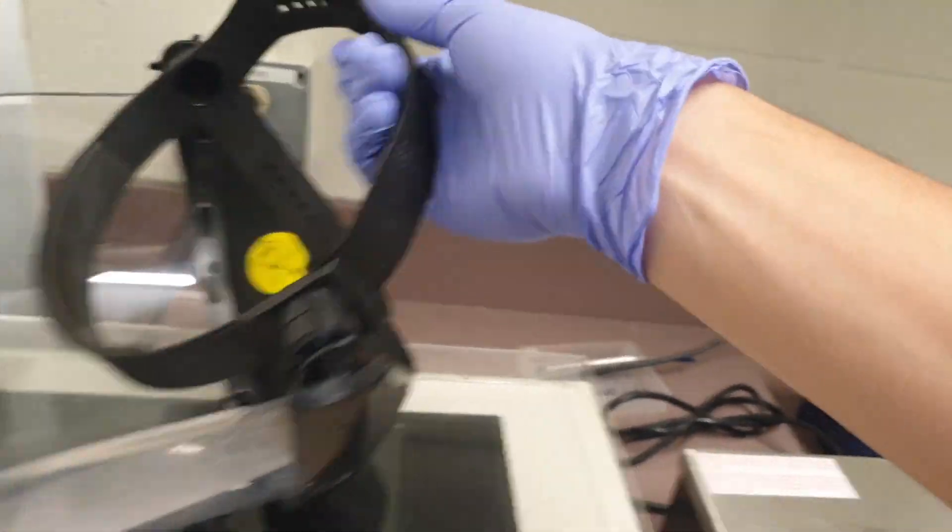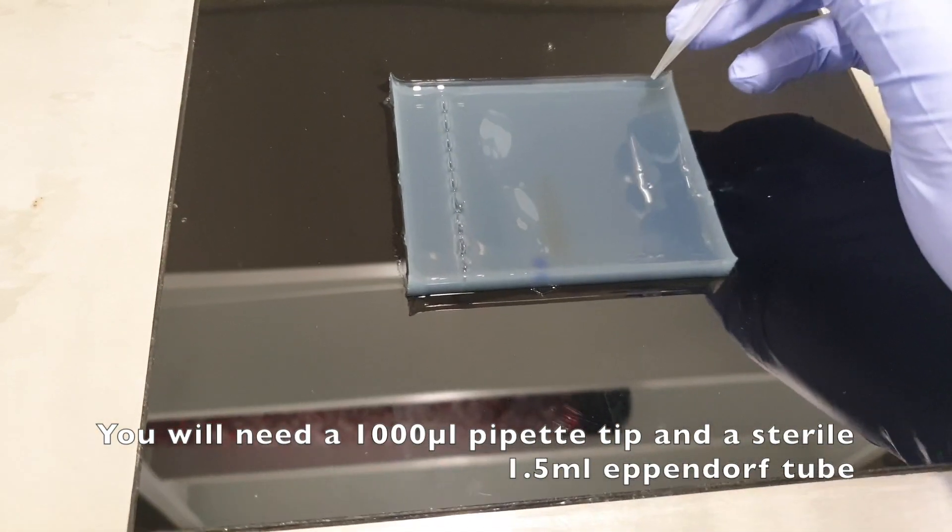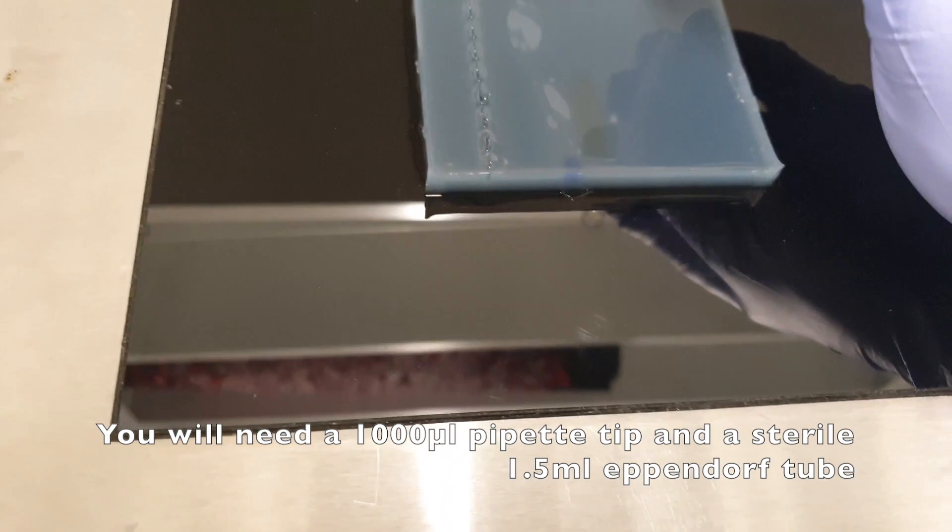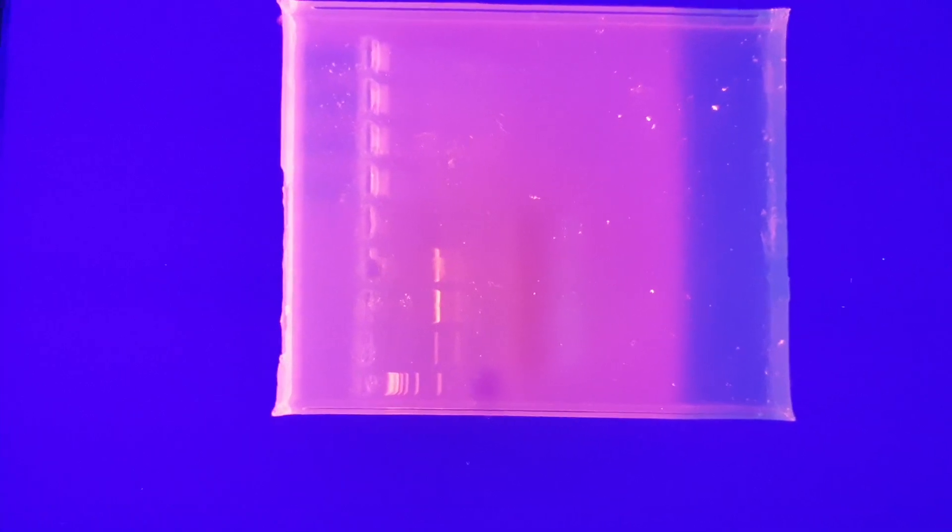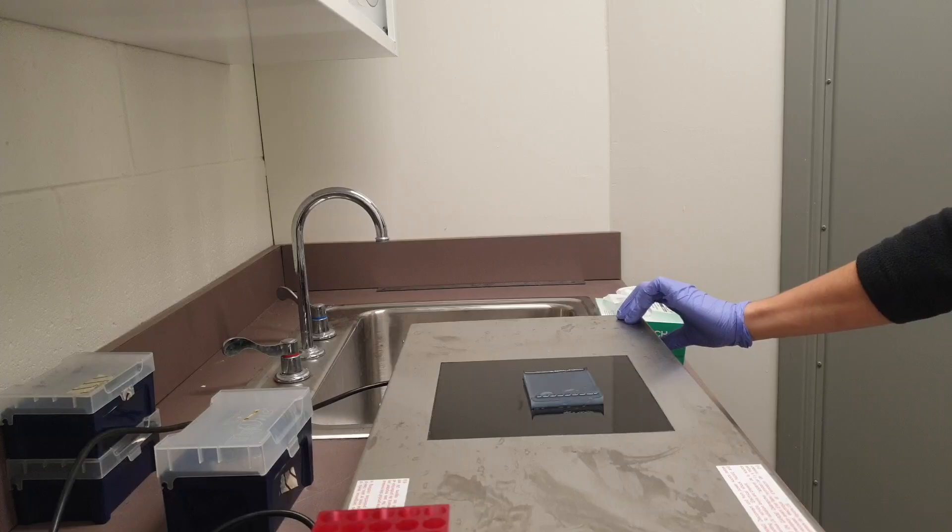What we're going to do is grab a sterile pipette tip, find the band that's going to be created, and then just poke it, hold it like this, and transfer it into a sterile tube. As you can see, the bands are right here, and we're going to try to catch this one right there. We'll be super quick.